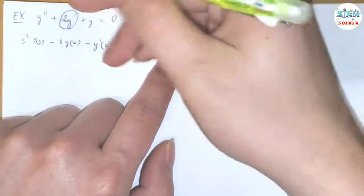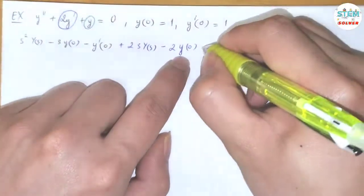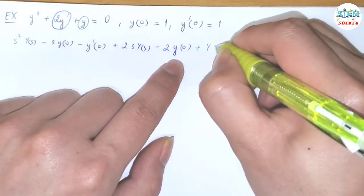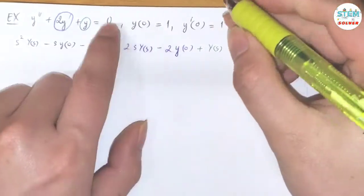Now for the third one, we're going to do the same thing. Plus, since we don't have any derivative, that means that we don't have any s. So just capital Y of s and that equals 0.